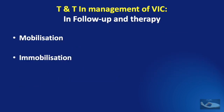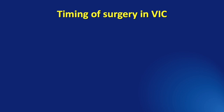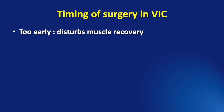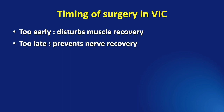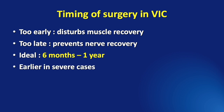As far as the follow-up and therapy are concerned, after surgery for Volkmann's ischemic contracture, a prudent use of the steps of mobilization and immobilization must be followed. What is the timing of all these surgical procedures? If it is done too early, it may disturb the muscle recovery. If it is done too late, it may prevent nerve recovery. The ideal time would be six months to one year, but it can be done a little earlier in severe cases and a little delayed in mild cases.